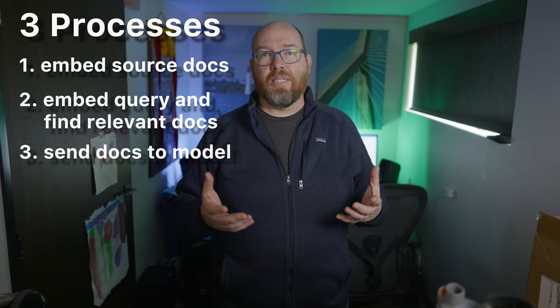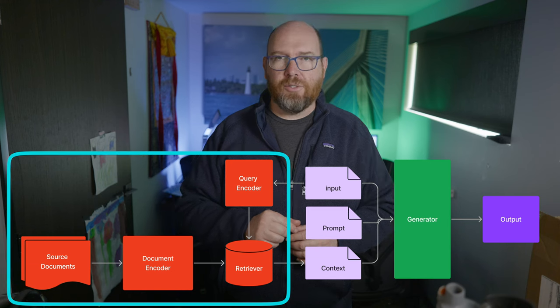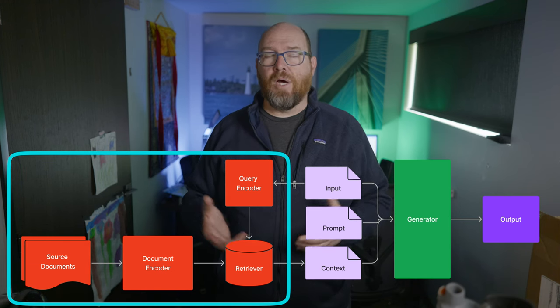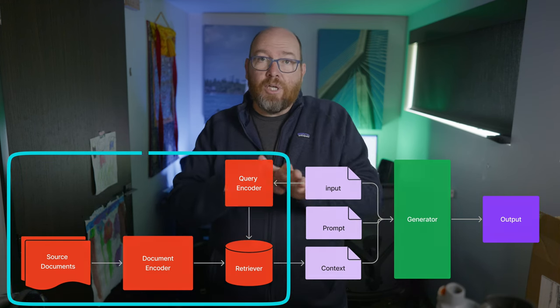In a recent video, I looked at the chunk size that might be best when using the collection of embeds to figure out what source material to refer the user to, based on any query. That's just a small portion of a true RAG solution, because I wasn't handing the results on to a model. In this video, I want to go a step further, looking at chunk sizes as they pertain to a more full RAG solution.